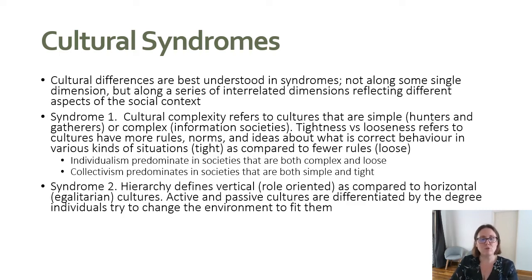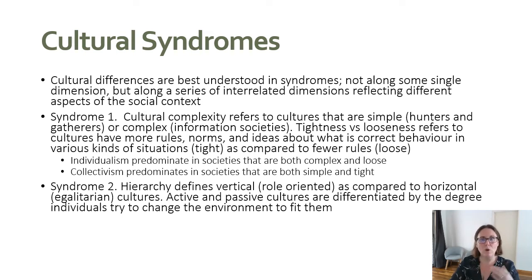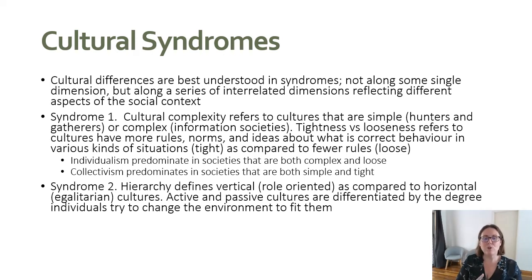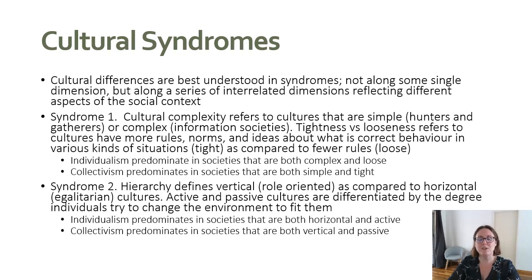A secondary syndrome is around hierarchy and activity. Hierarchy — defined by Hofstede as power distance — has also been defined as vertical versus horizontal: vertical meaning many distinct layers between people based on role, versus horizontal where everyone is egalitarian. Active and passive cultures differentiate by the degree to which individuals try to change the environment to fit them, which is very similar to the harmony and mastery proposed by Schwartz. What has been found is that individualism tends to predominate in societies that are horizontal and active, whereas collectivism predominates in vertical and passive societies. Cultural dimensions are interrelated, not all separate from one another.